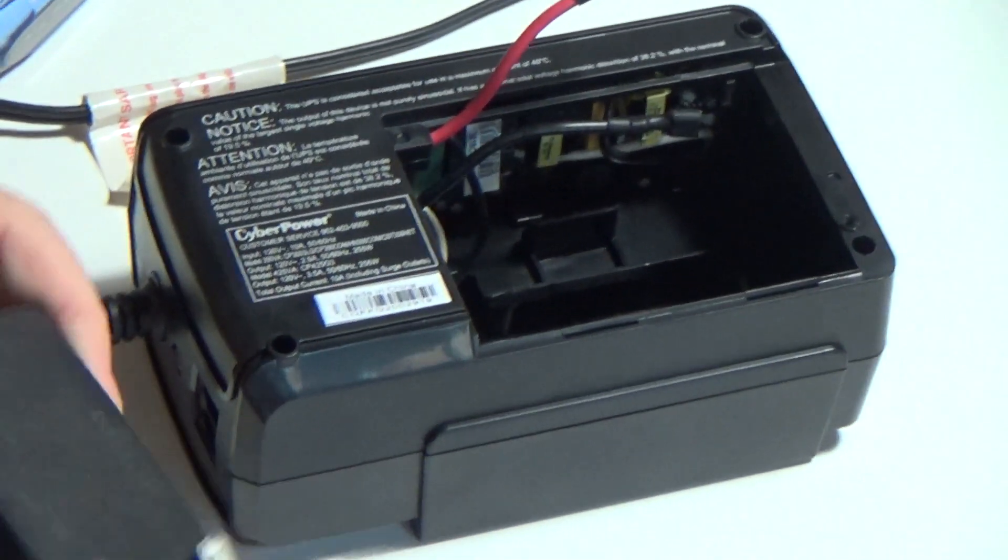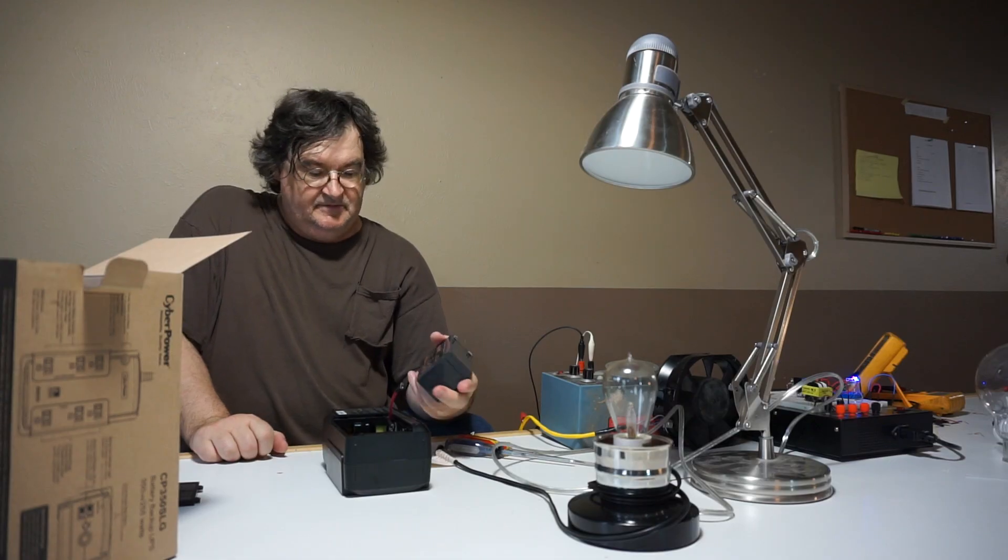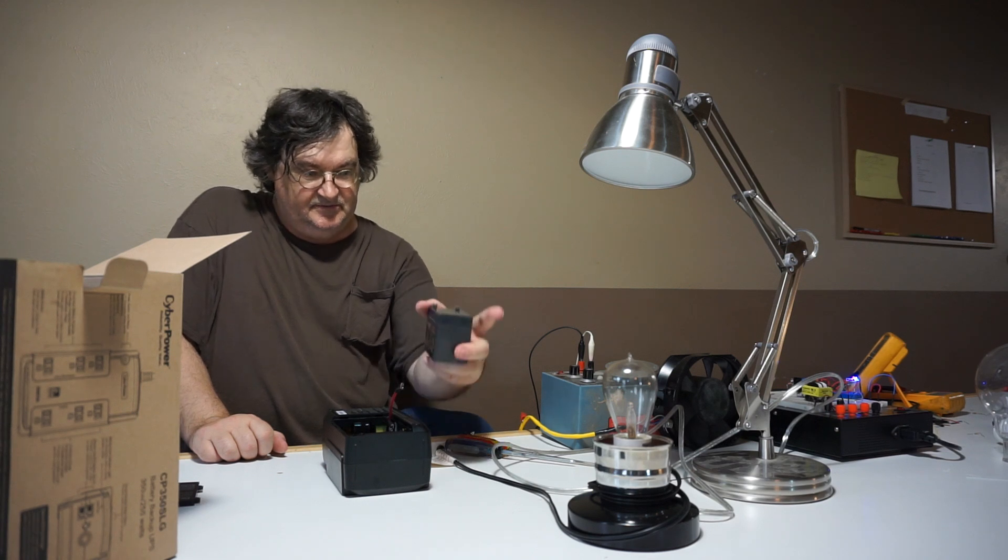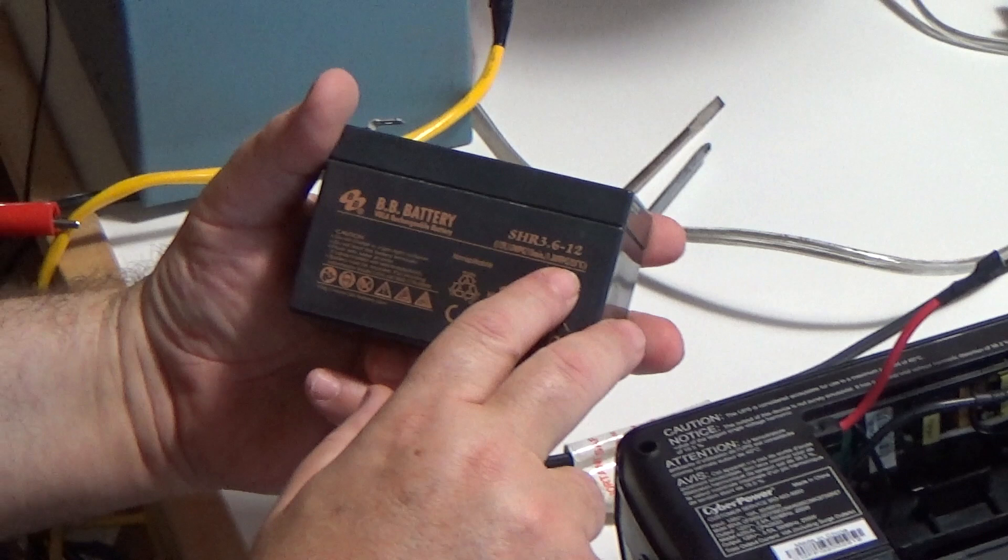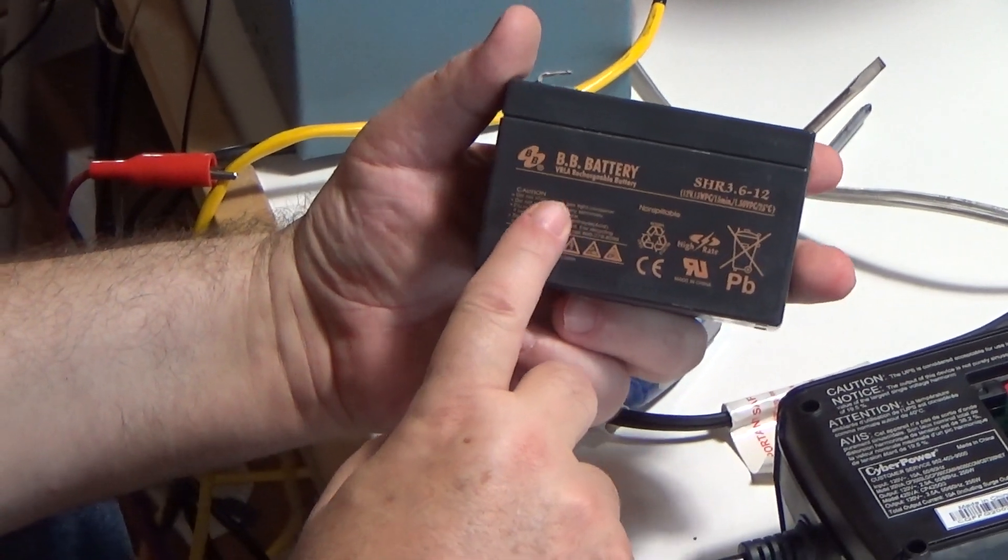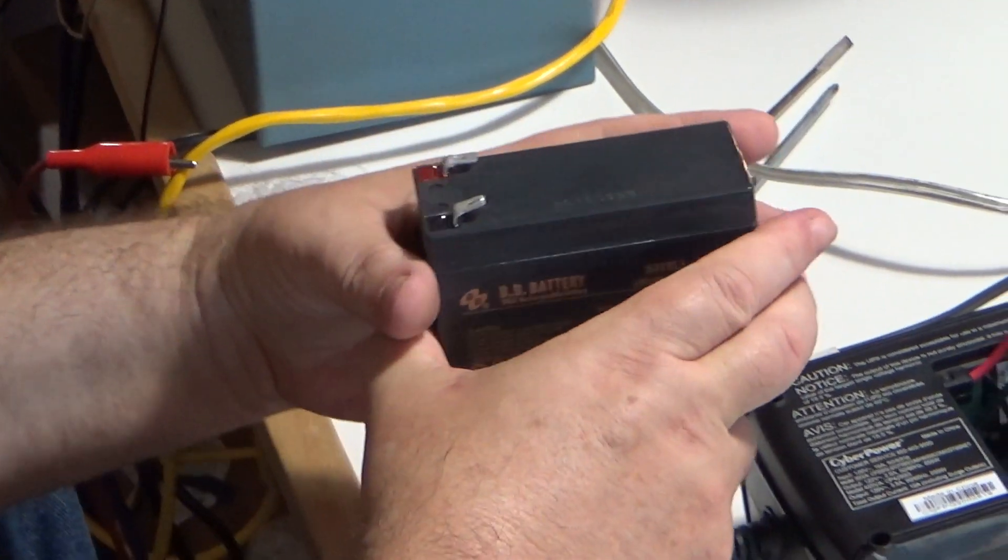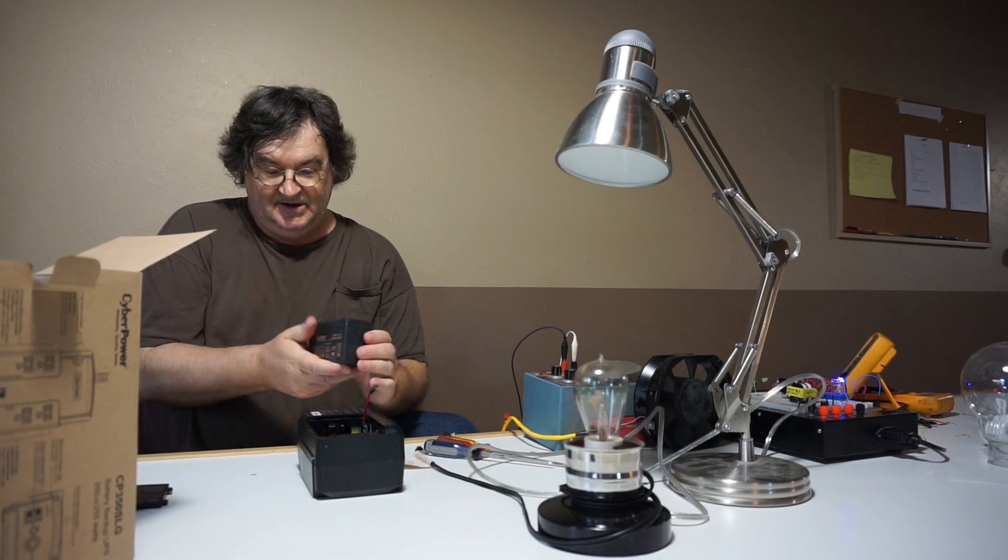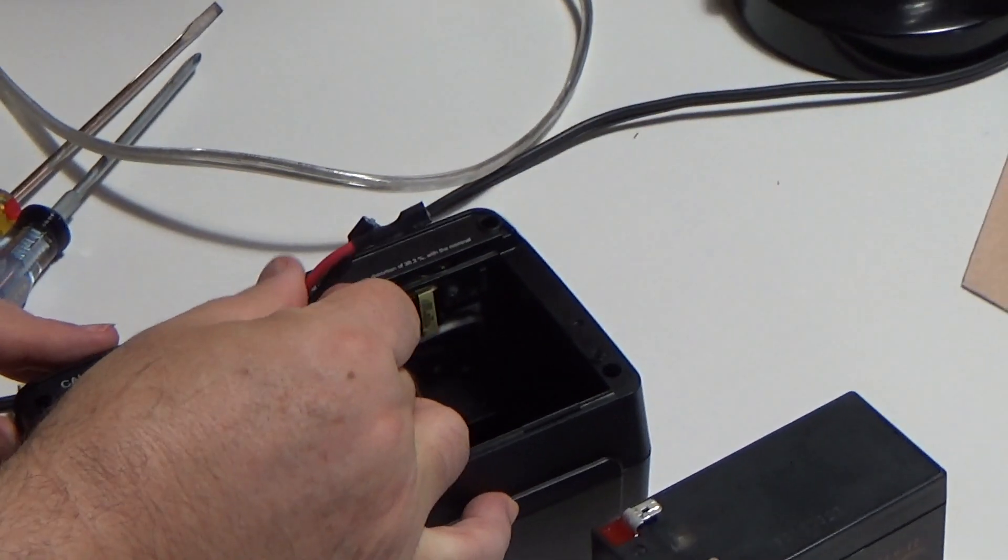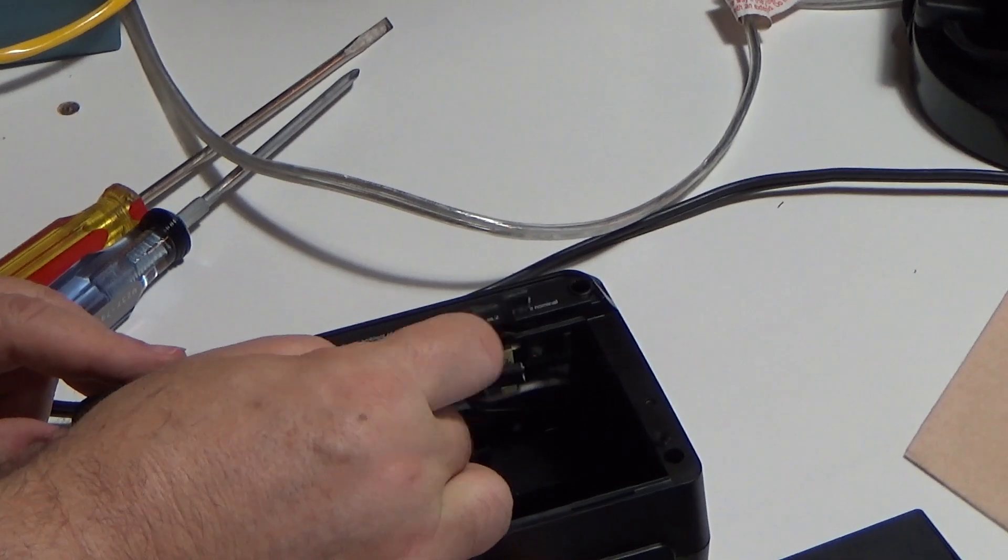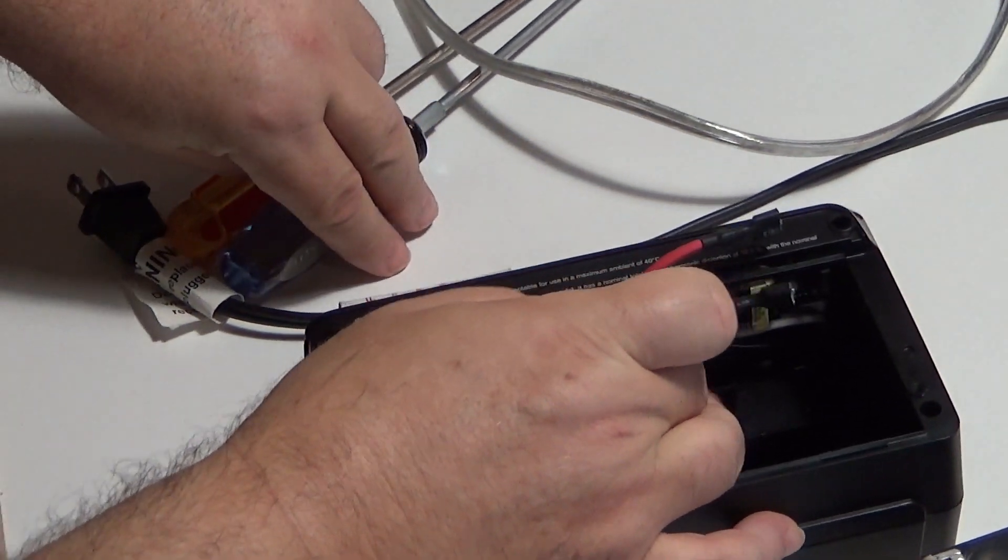So when the power is removed, the energy that was required to continue to run the light bulb is being supplied by this little battery, which is a 12 volt lead acid battery. These are the connections to the circuit that converts it from 12 volt DC to 120 volt AC.